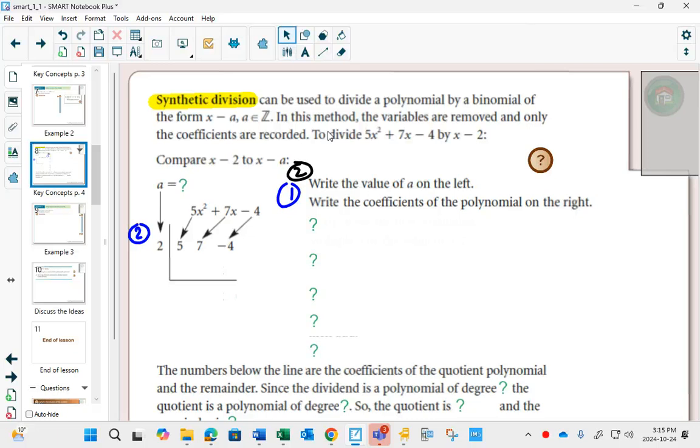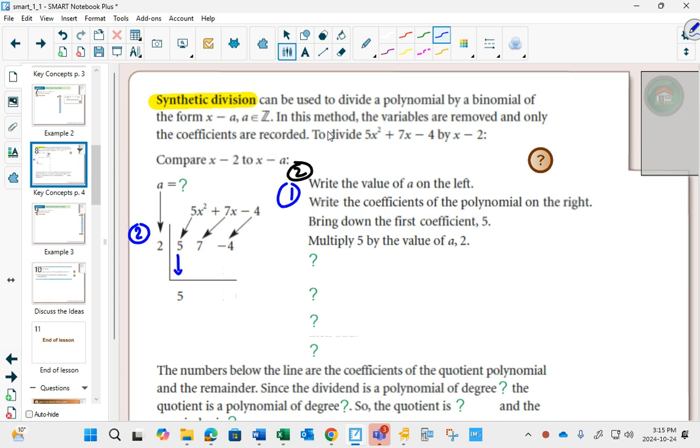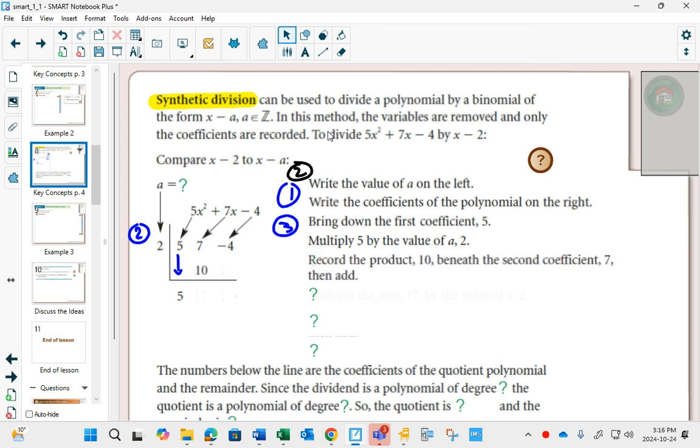Then you're always going to bring down your first number. I like to show that by actually drawing a little arrow when I bring it down. That's my step 3. And then you just repeat the process of multiplying and add.